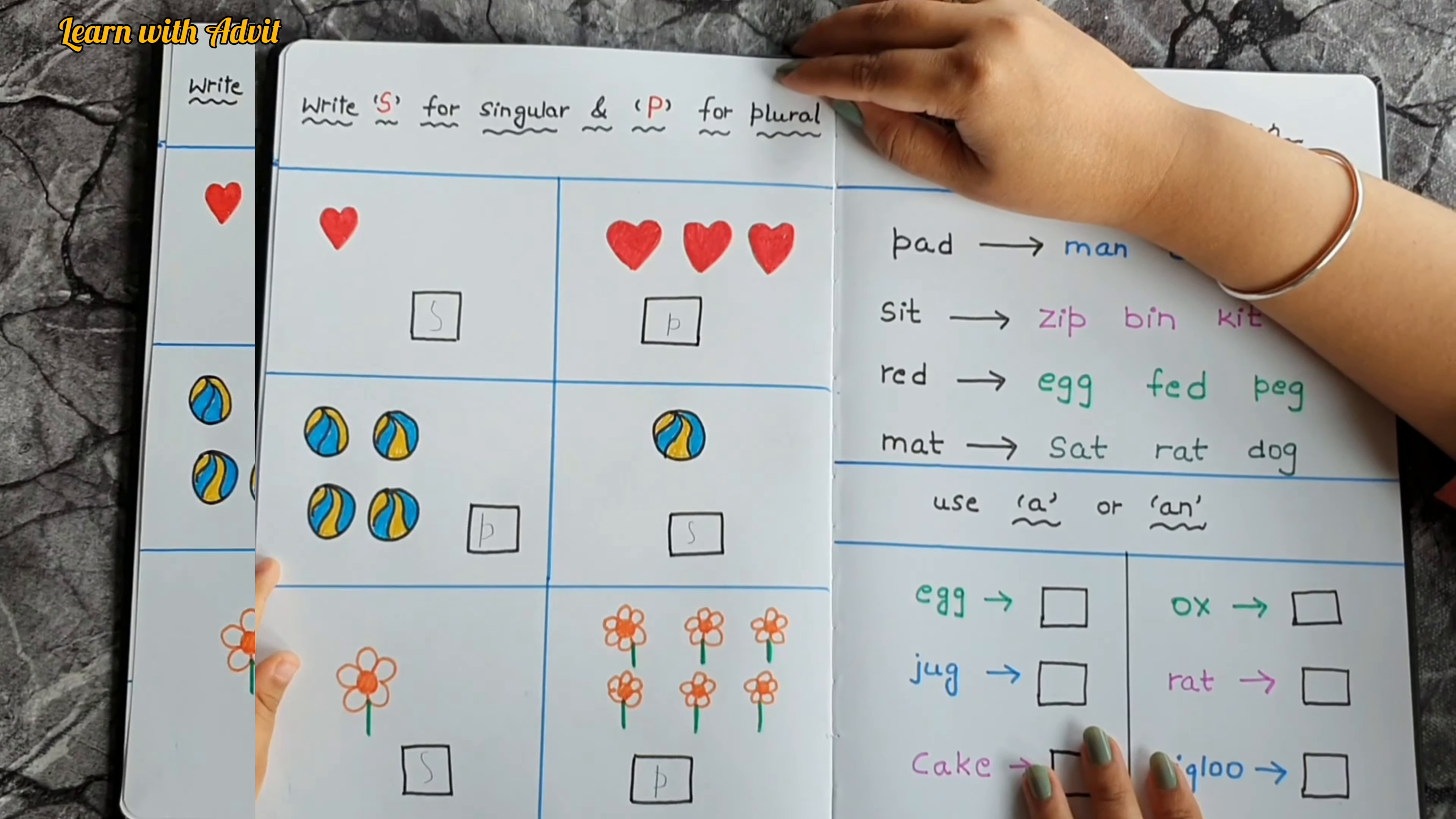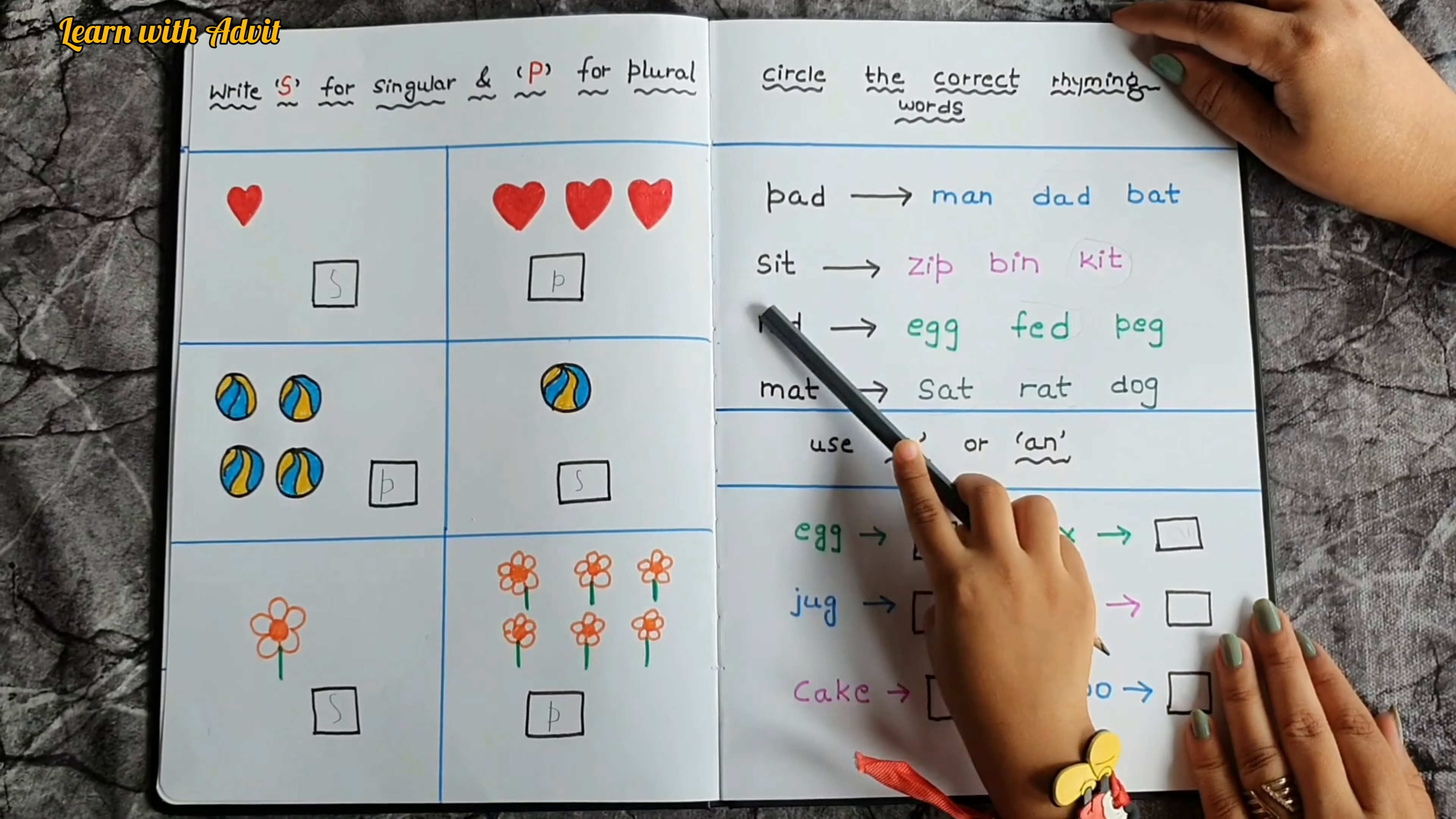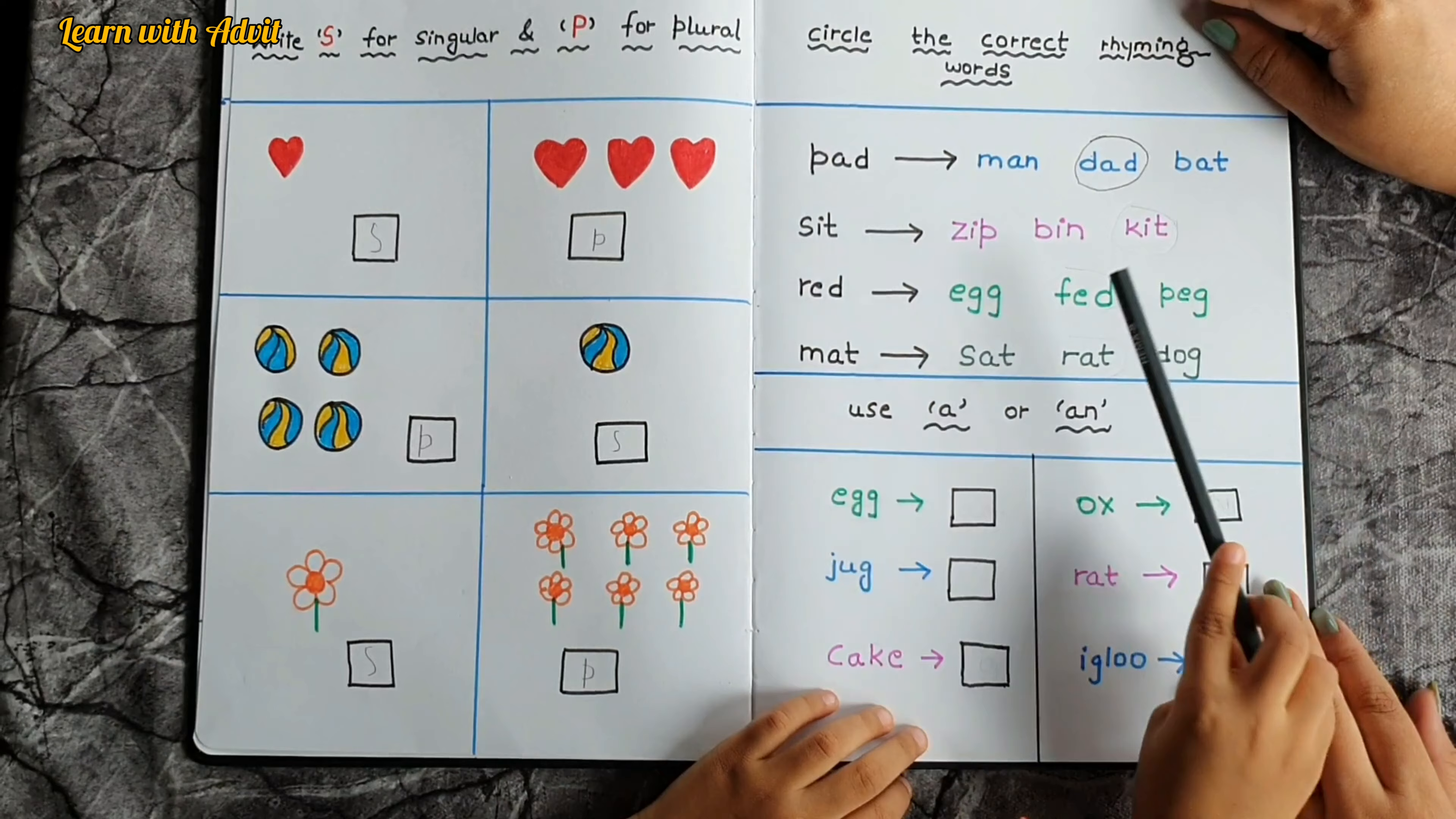In this sheet you have to circle the correct rhyming words, okay. So come on start doing it. Pad and dad, dad. Where's the pad? Do it fast. Next word is hit, sit on the kit.